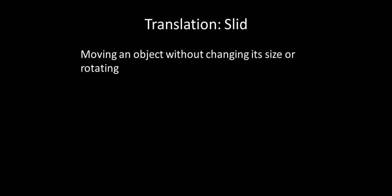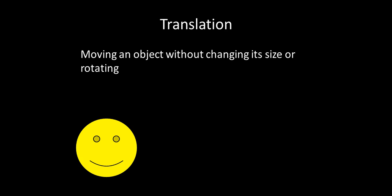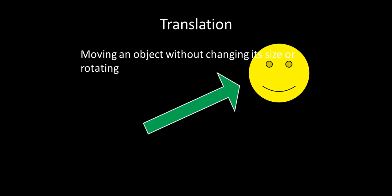Translation, often called the slide, is when you move an object without changing its size or rotating it. So here's an example of translation. We would take this happy face and we would move it up to there. Again, it's the same exact size. The smiley face is the same size, hasn't changed, hasn't rotated at all. It's exactly the same, it just moves from one place to another.